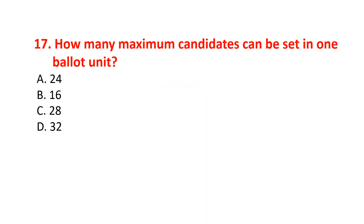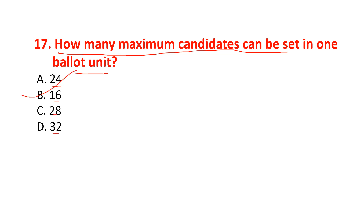How many maximum candidates can be set in one ballot unit? Options are 24, 16, 28, or 32. The correct option is 16.